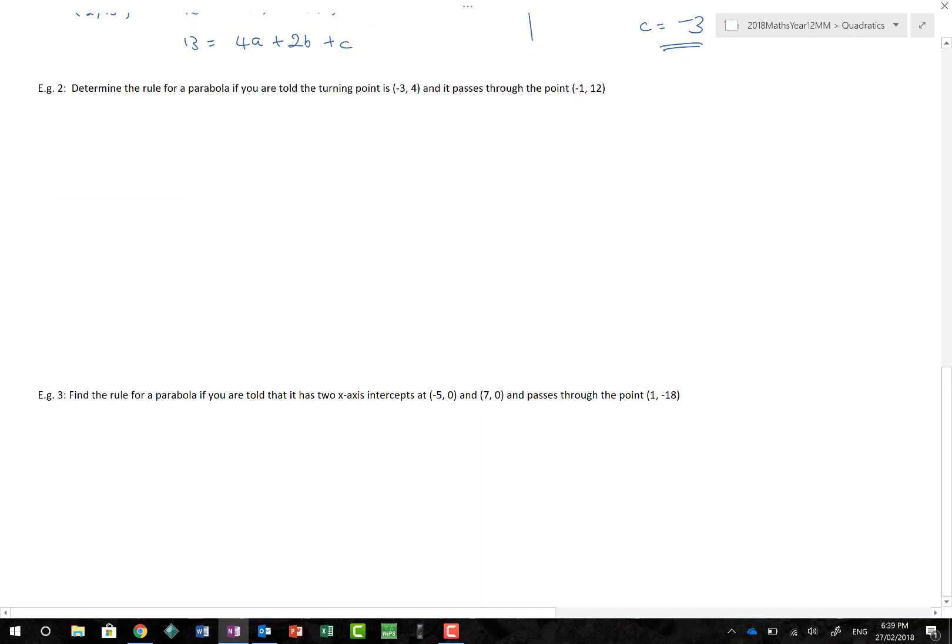What about this one? Determine the rule for a parabola if you are told the turning point is (-3, 4), and it passes through (-1, 12). Well, it's given me a turning point. So I'm going to use y = a(x - h)² + k. And so we get y = a(x + 3)² + 4. We've got to now put in our turning point.